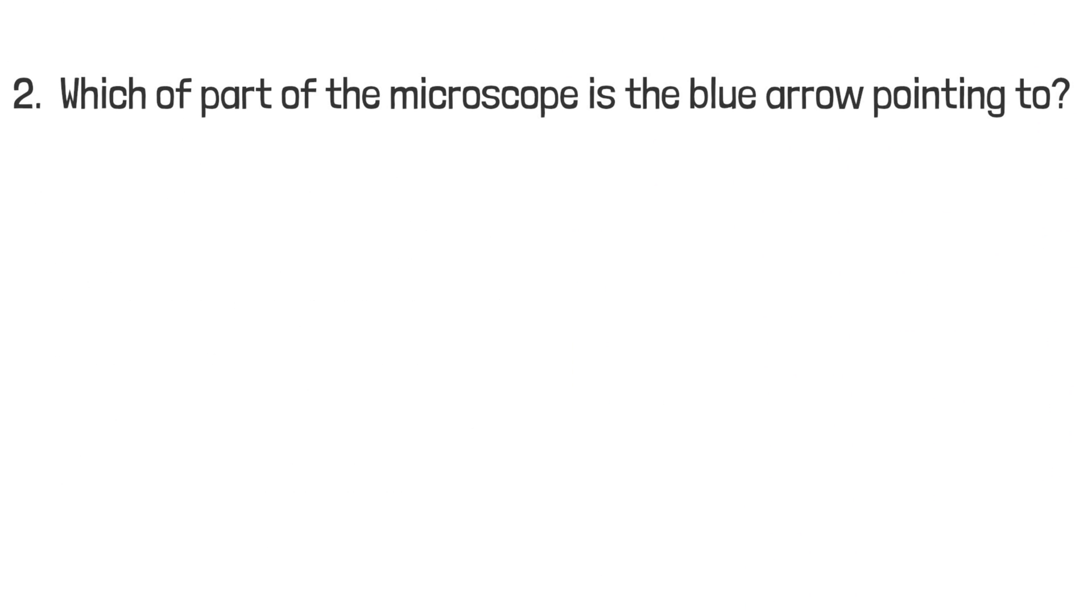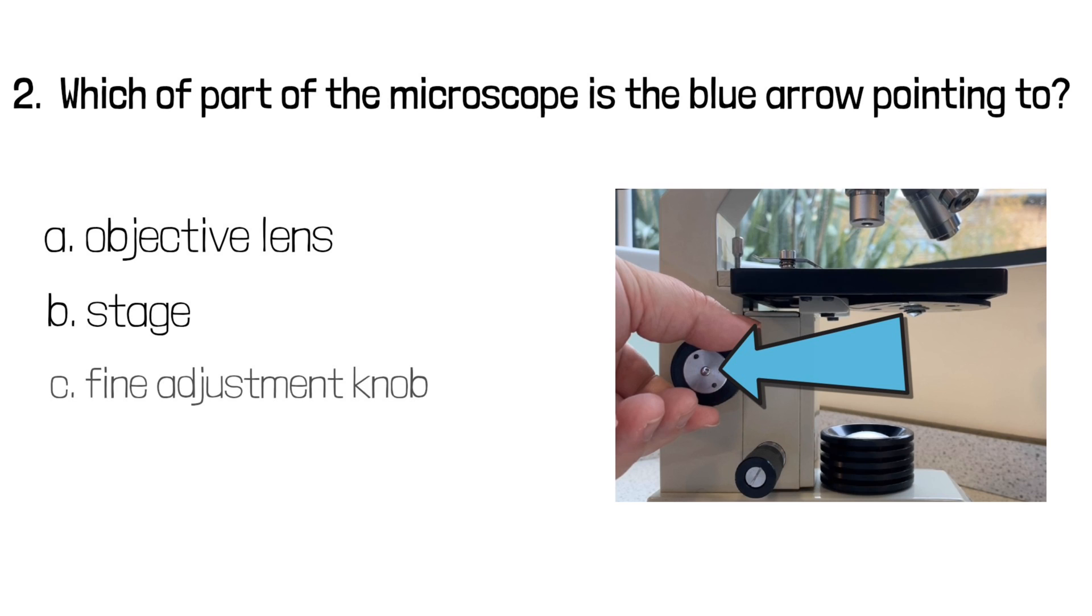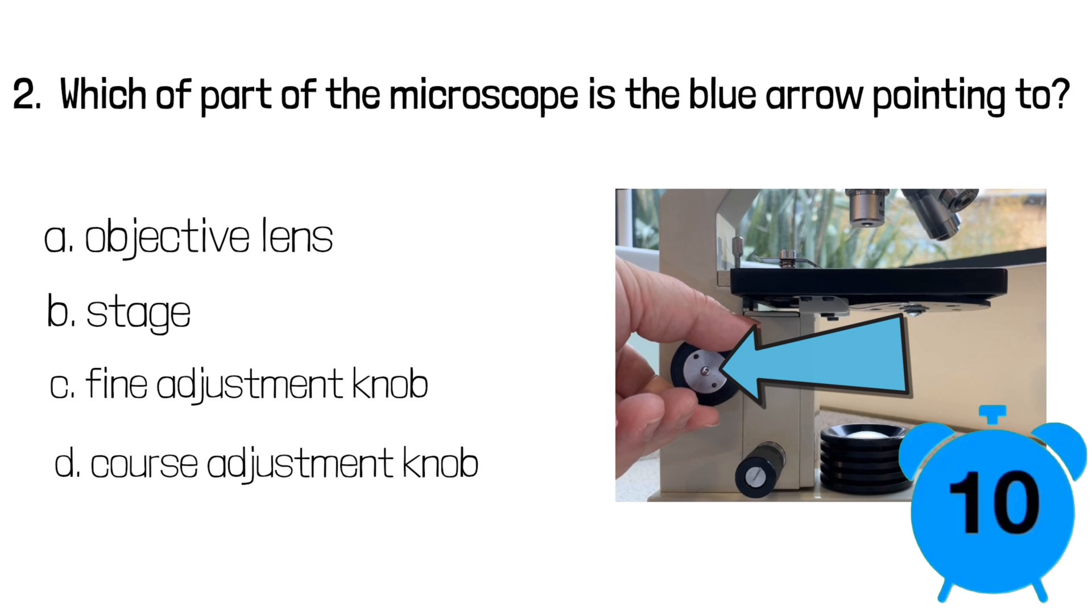Question number two. Which part of the microscope is the blue arrow pointing to? Is it a) the objective lens, b) the stage, c) the fine adjustment knob, or d) the coarse adjustment knob? It was d) the coarse adjustment knob.